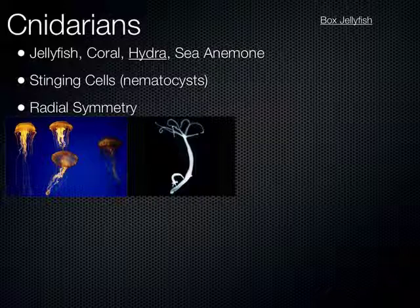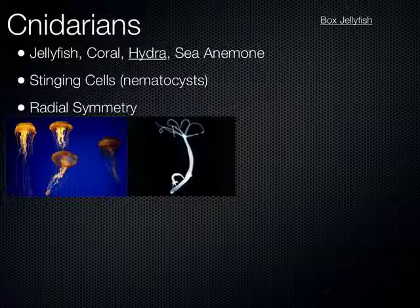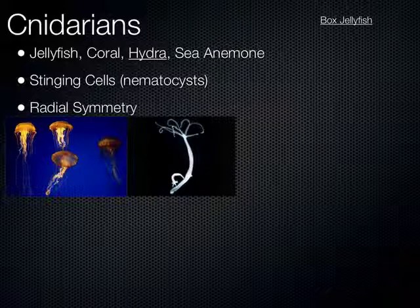The hydra has one body opening for its digestive system. Food goes in one opening, gets digested, and then waste leaves through the same opening. In the medusa stage, the opening is on the underside between the tentacles. In the polyp stage of the hydra, the opening is between the tentacles at the top — they grab a chunk of food, sting it, kill it, and put it inside the body opening to be digested.